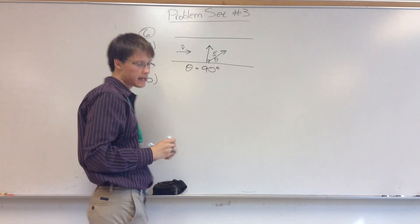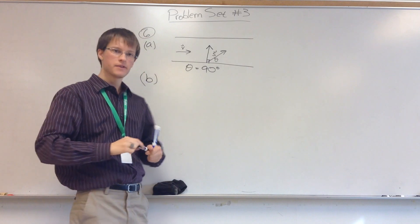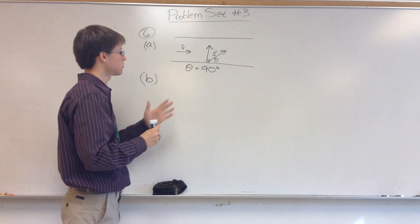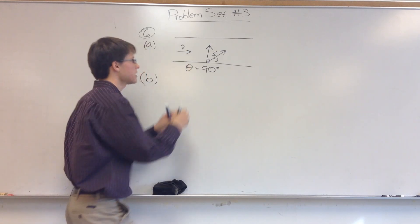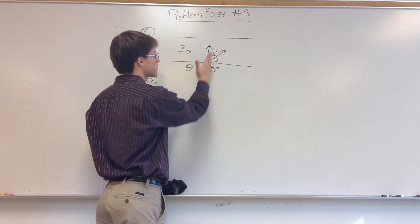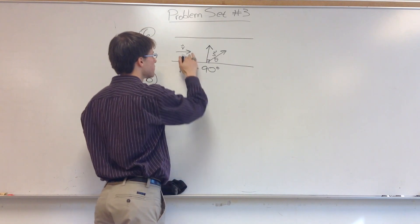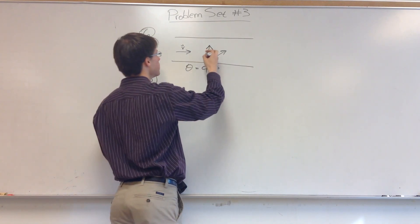Part B asks a slightly different question. This time, part B asks, what angle should I travel at if I want to swim straight across? Because here, our swimmer is trying to swim straight,